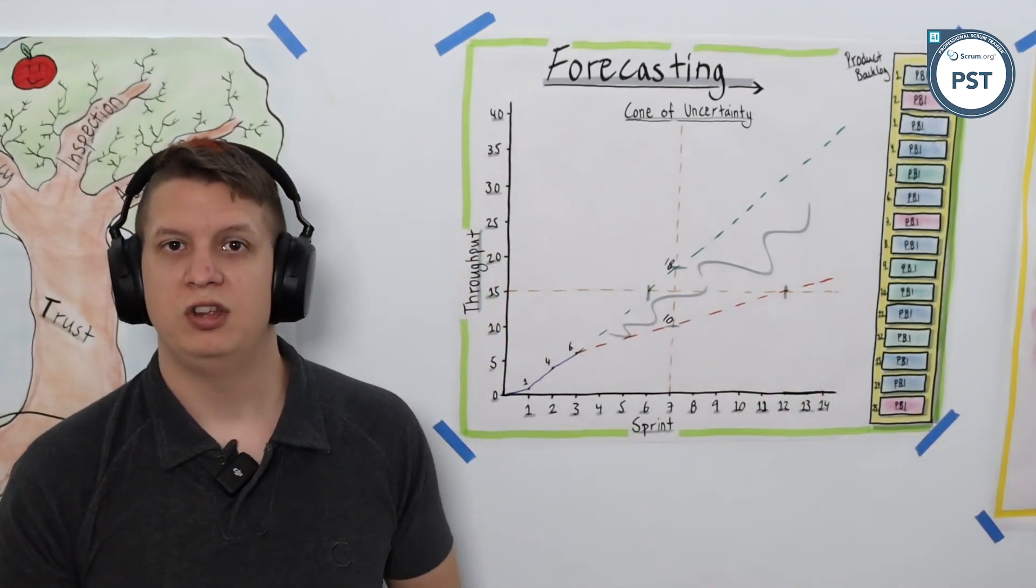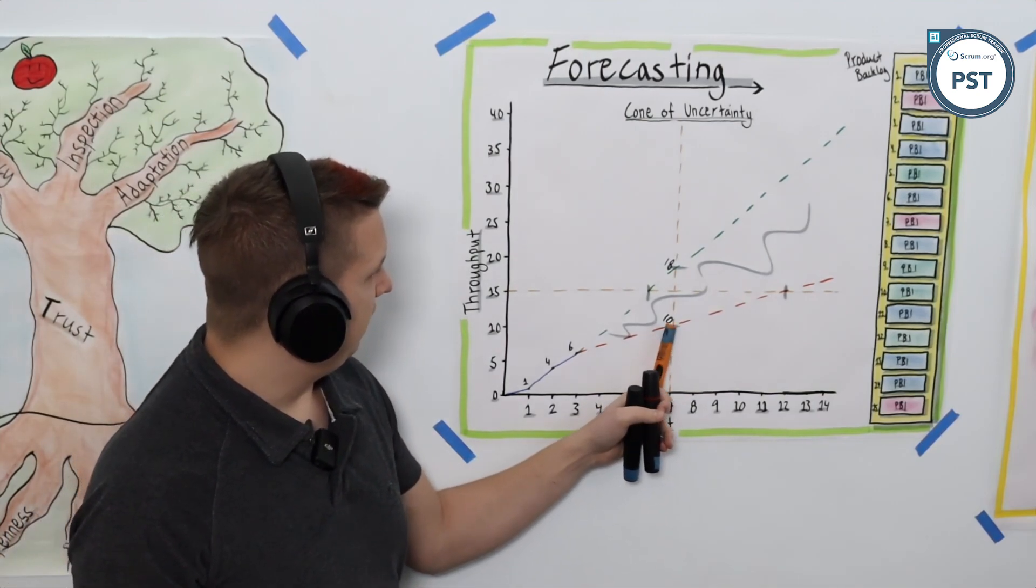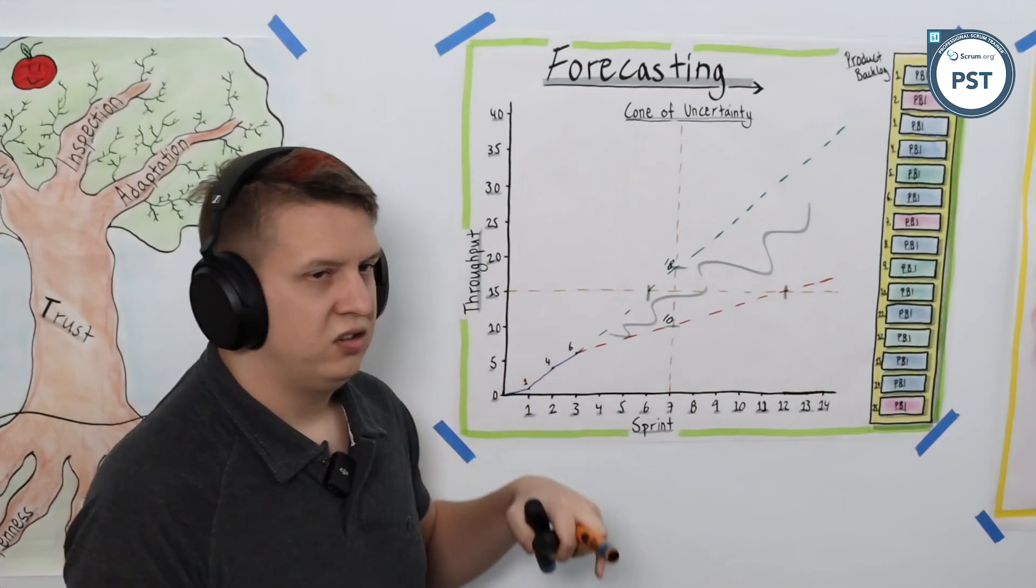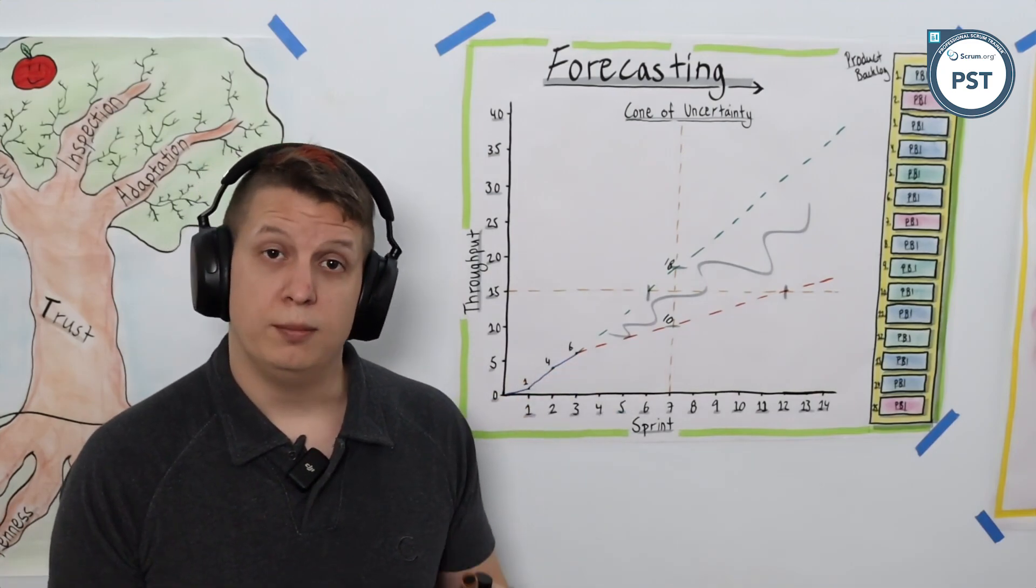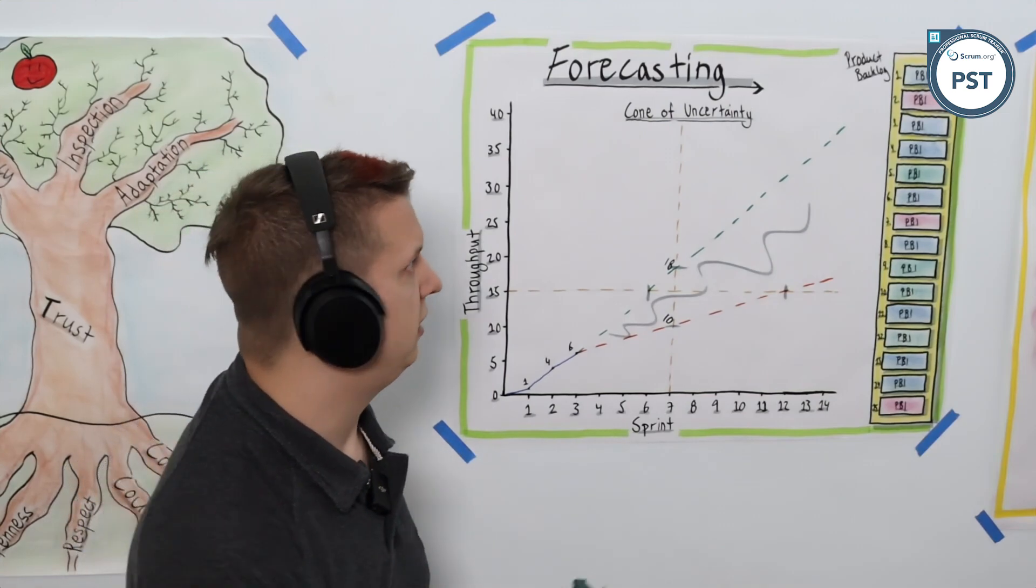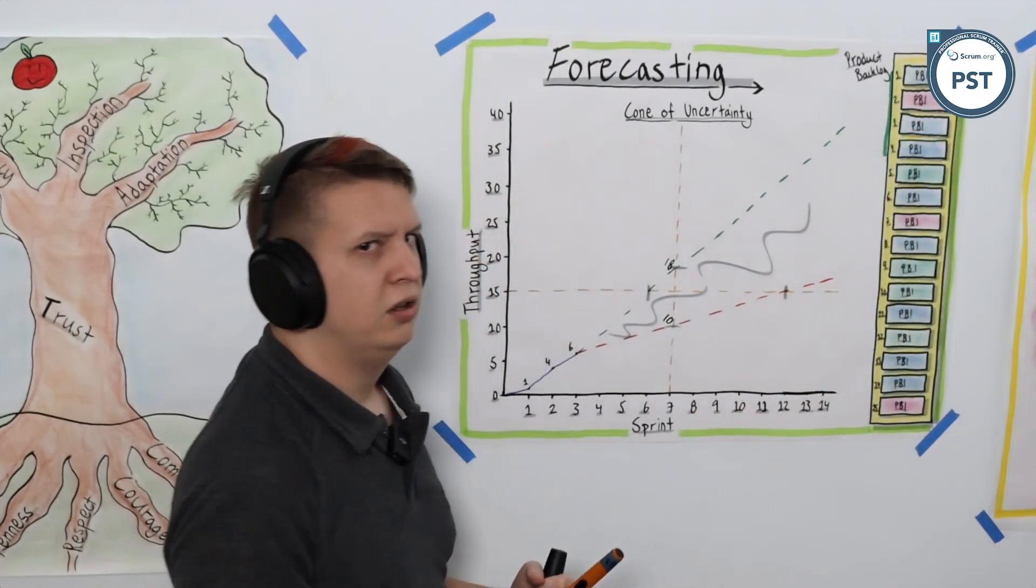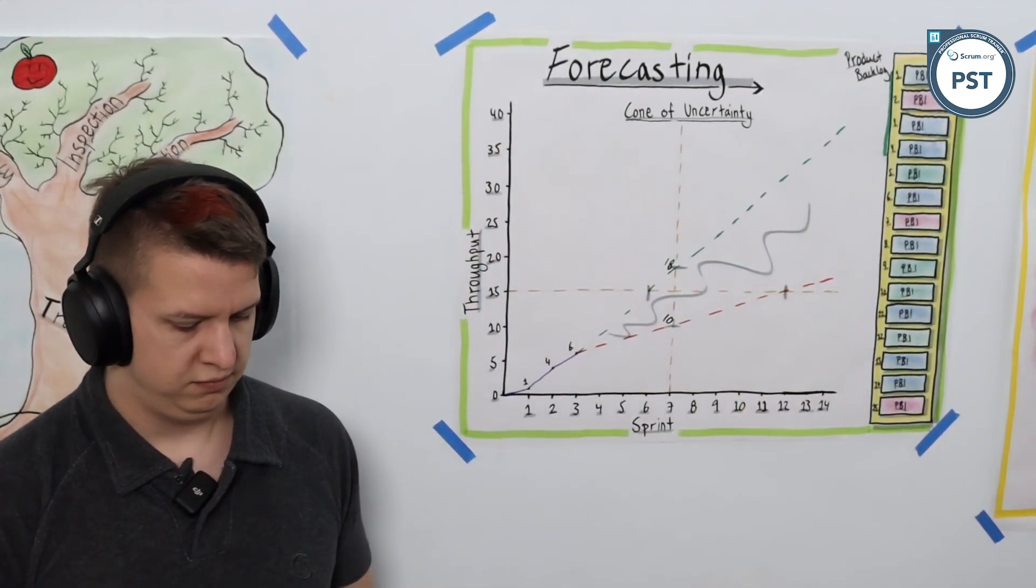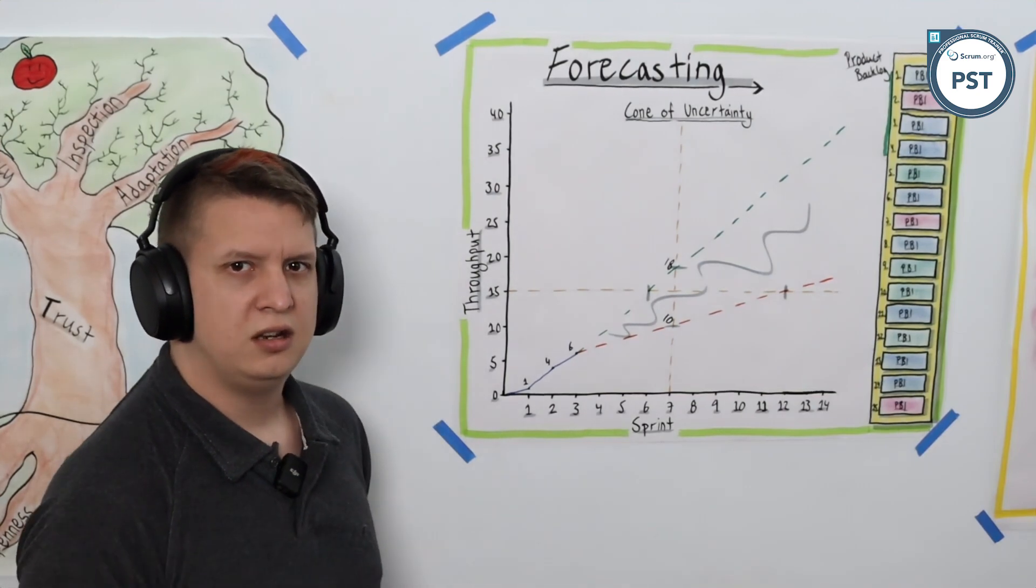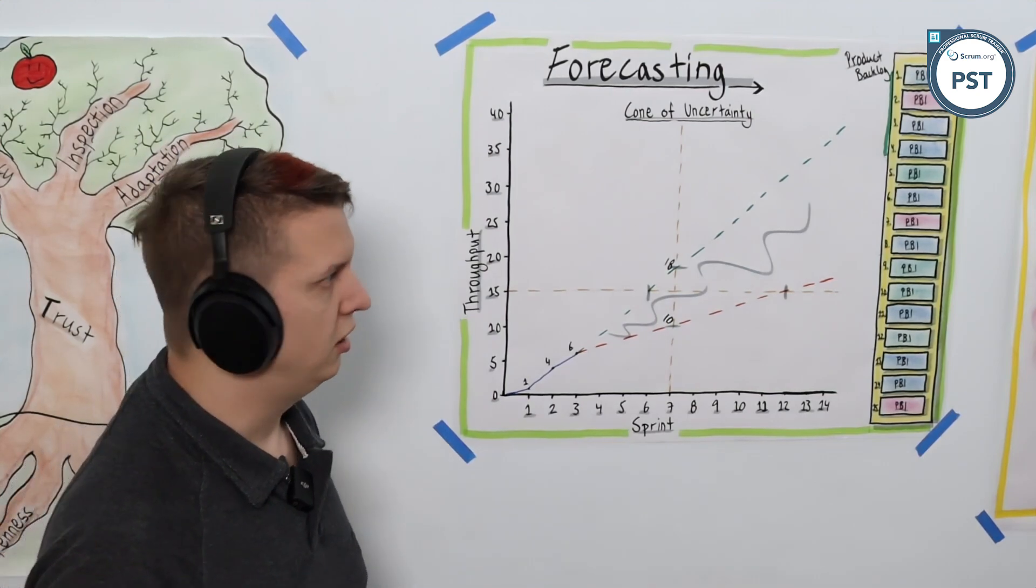Now we can have conversations about that. We can check, okay, well if we are going to get anywhere from 10 to 18 done by sprint 7 and we've got 6 done now, which 4 are the most important? Because those 4 are probably the ones we should put at the top here. The next 4, well they're less likely to get done, but they're still reasonably based on our average going to get done.